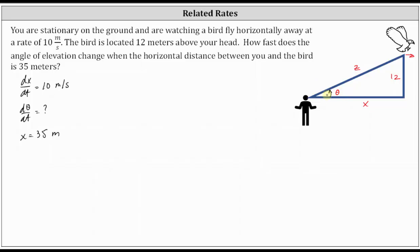Notice in relation to the angle theta, 12 is the opposite side and x is the adjacent side. Therefore we'll use the tangent function. Our equation is going to be tangent theta equals 12 divided by x.